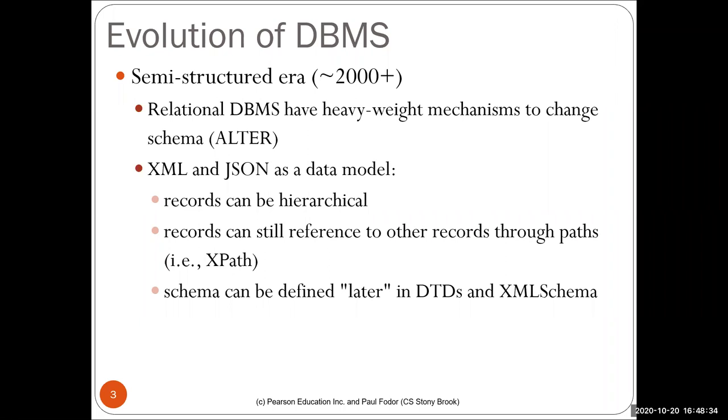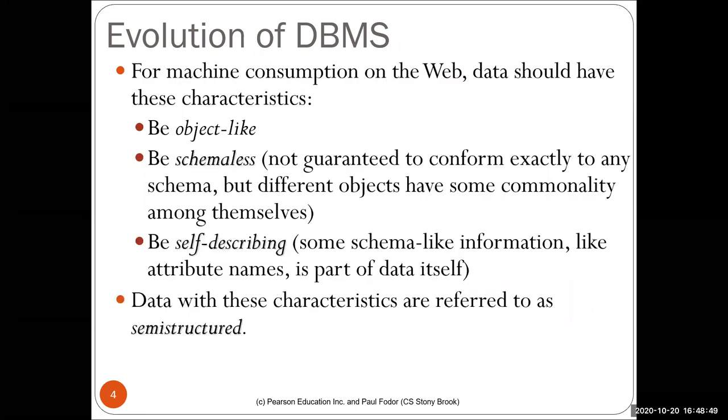Records, even in these complex objects, can be referred from other records through paths. When we learn about XML, we learn about XPath, XQuery and style sheets to actually modify and present XML in different ways, even in HTML. The idea being that schema can be defined later. For instance, in XML, you can define later the XML schema, the current standard for defining the schema, or a DTD document. Also, for machine consumption, data should have characteristics which are not basically relational in essence. They have to be object-like. Basically, person should have attributes, name, hobbies and so on. Schema-less, not guaranteed to conform exactly to any schema, but different objects may have some commonality among themselves and be self-describing—that attributes are preceded by the attribute name. Data with these characteristics are referred as semi-structured.